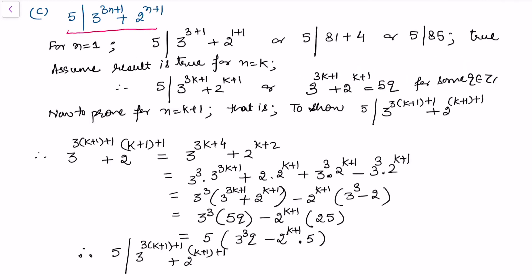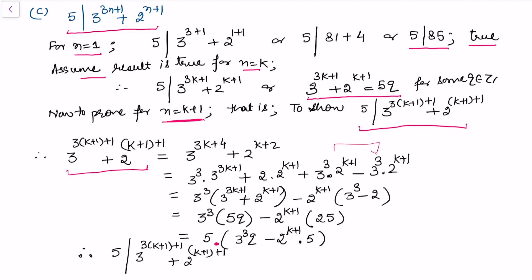For part c, we prove 5 divides 3^(3n+1) + 2^(n+1) by induction. Base case n=1: 5 divides 85, which is true. Assuming the result for n=k, we prove it for n=k+1 by adding and subtracting the same quantity, grouping terms to apply the induction hypothesis, and showing the expression is a multiple of 5.